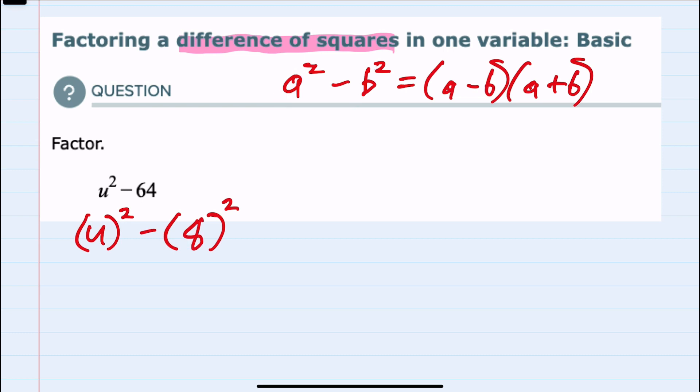So we can see from this example that to use the difference of two squares, our a value is just u and our b value is now 8.